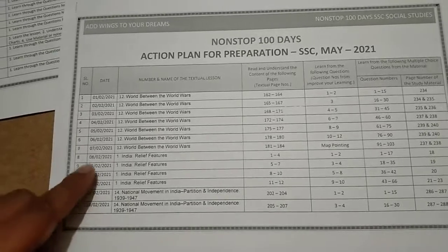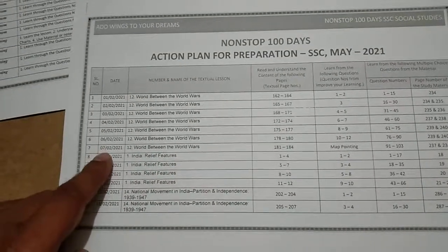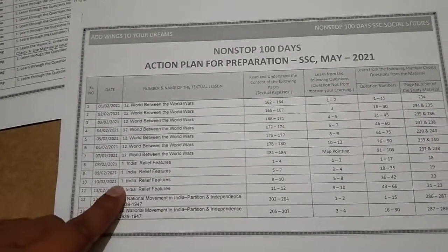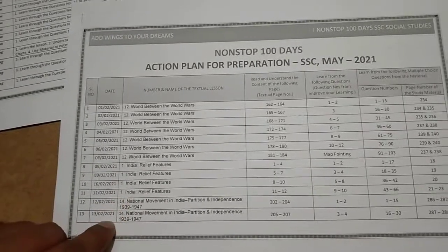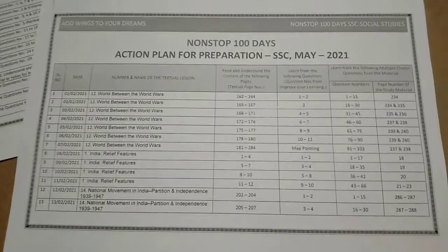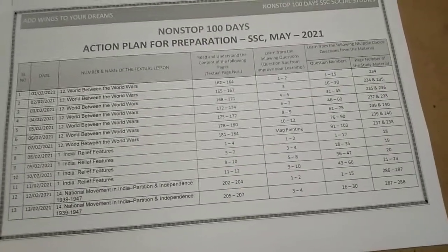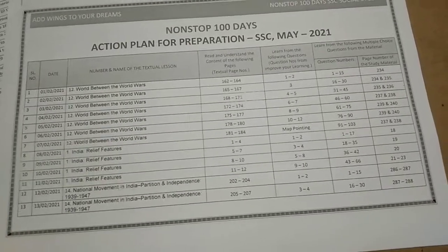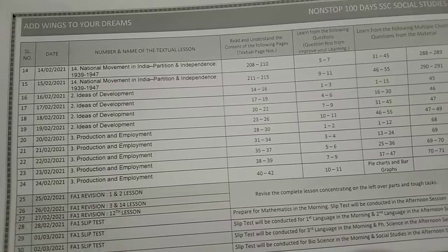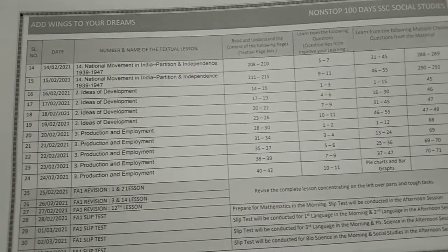Lesson number 12 continues up to day 7. Then we have 4 days for the first lesson, 'India Relief Feature', which is also an important chapter. After that, on the 12th and 13th, we have lesson number 14, 'National Movement in India — Partition and Independence, 1939 to 1947'. The same lesson will be continued up to 15th February 2021.